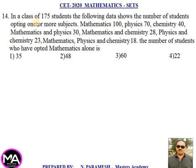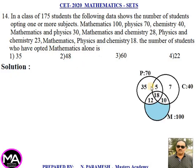14th question. In a class of 175 students, the following data shows the number of students opting one or more subjects: Mathematics 100, Physics 70, Chemistry 40, Mathematics and Physics 30, Mathematics and Chemistry 28, Physics and Chemistry 23, Mathematics, Physics and Chemistry 18. Find the number of students who obtained Mathematics alone. Solution: Using a Venn diagram, all three subjects = 18.